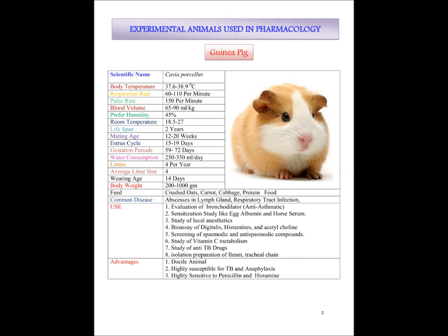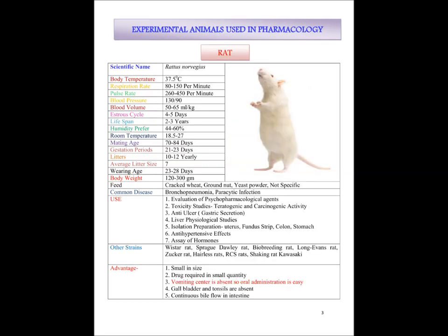The next animal we will discuss is rat, which is the most commonly used experimental animal in pharmacology. The body temperature of rat is about 37.5 degrees centigrade. Respiration rate is 80 to 150 per minute and the pulse rate is 260 to 450 per minute. Blood pressure is 130 by 90 — one of the important factors we should consider. Blood volume is 50 to 65 ml per kg.